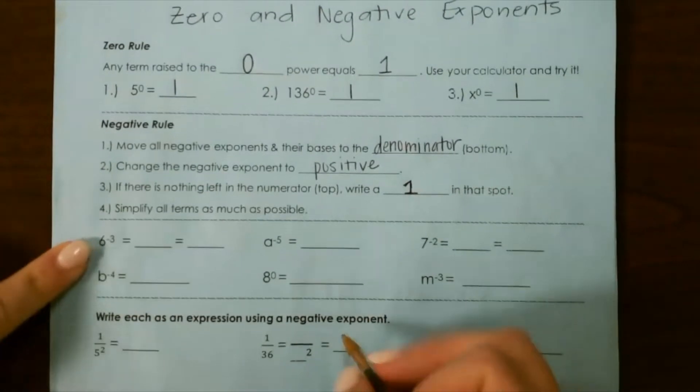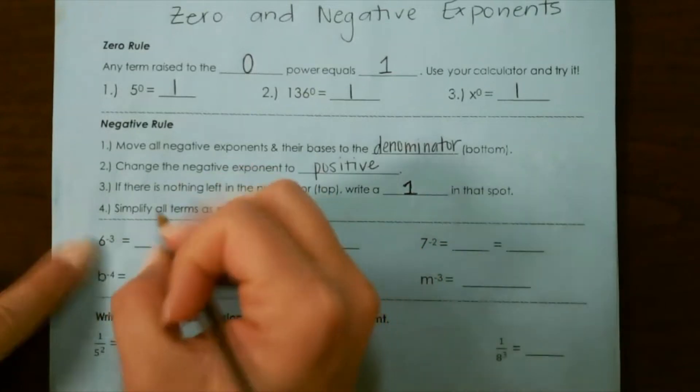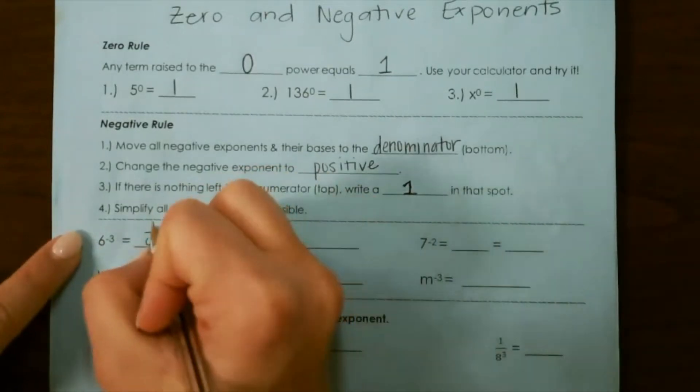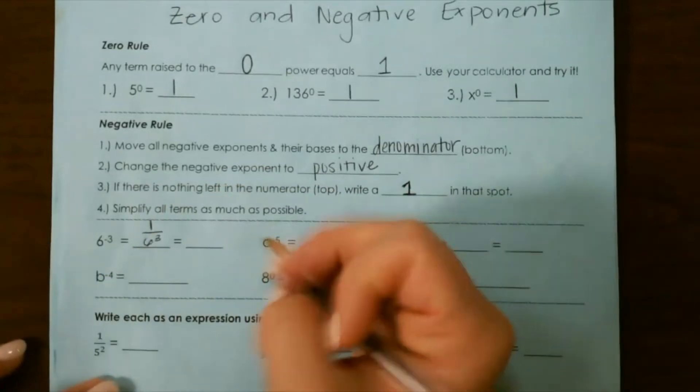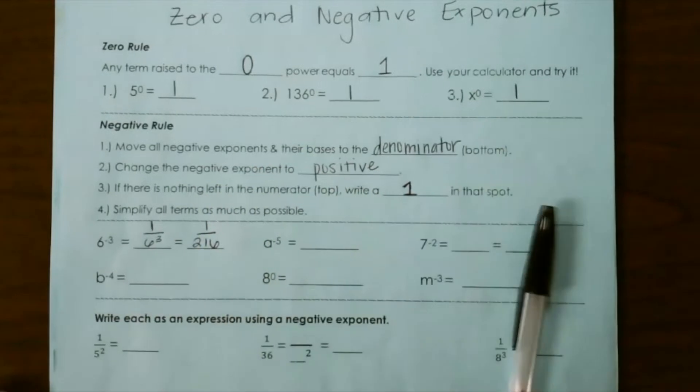So for this first one, we take the negative exponent and its base to the bottom, so that would be 6 to the third power, and again you put a 1 in the numerator. 6 to the third power would give us 216.